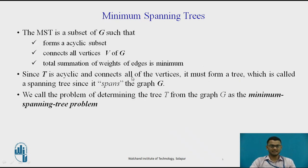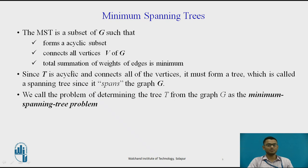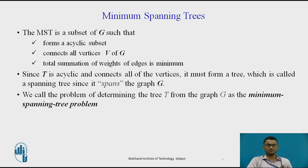MST is a subset of graph G such that it forms an acyclic subset — that means no cycle should be formed when two or more nodes are connected. It connects all the vertices available in set V of the graph G, meaning all the vertices of the graph have to be included in the spanning tree. The total summation of weights of edges should be minimum, meaning the edges included in the MST should give a minimum total weight.